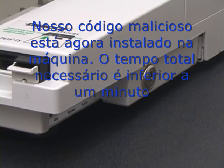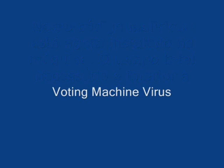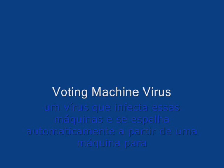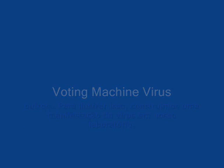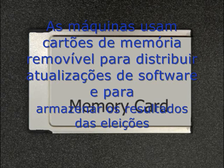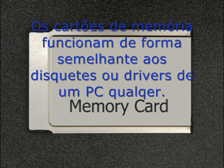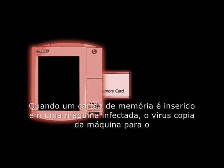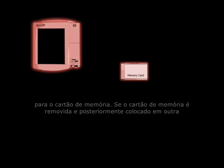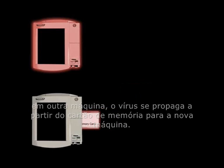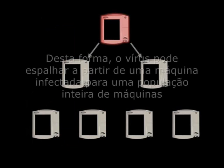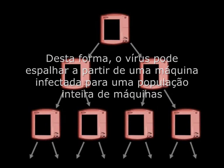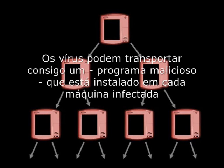Due to design flaws in the Diebold AccuVote TS voting machine, it is possible to construct a computer virus that infects these machines and spreads automatically from one machine to many others. To illustrate this, we have constructed a demonstration virus in our lab. The machines use removable memory cards to distribute software updates and store the results of elections — the memory cards function similarly to floppy disks or thumb drives on ordinary PCs. Memory cards act as carriers for the virus. When a memory card is inserted into an infected machine, the machine copies the virus onto that memory card. If the memory card is removed and later put into another machine, the virus spreads to the new machine. In this way, the virus can spread from one infected machine to an entire population of machines. The virus can carry with it a malicious payload program that is installed on every infected machine.